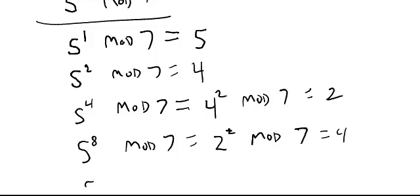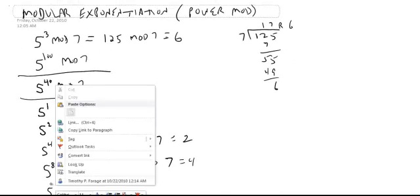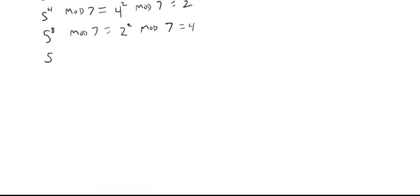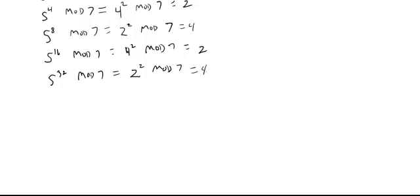Double the exponent: 5 to the 16 mod 7. We take the previous value, which is 4, squared mod 7. 5 to the 32 mod 7: take the previous value, 2, square mod 7, and you get 4. And now we can stop here.